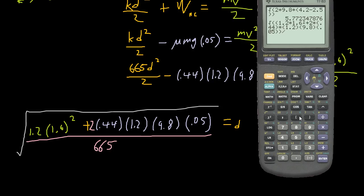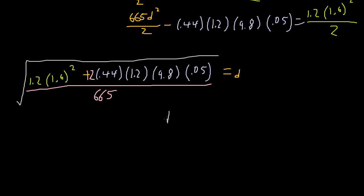All over the denominator, which is 665. And that gives me 0.0734. And since I think your answer is in centimeters, and this is in meters, so we have to multiply by 100. So distance is 7.347 meters. So d is equal to 7.347 meters.